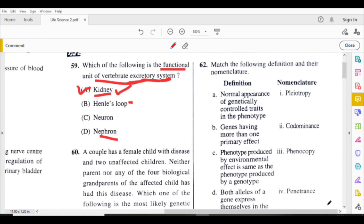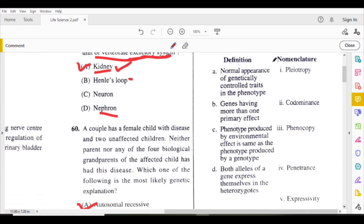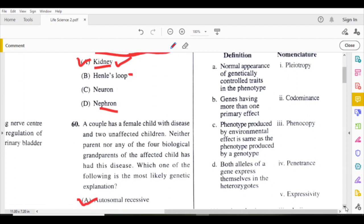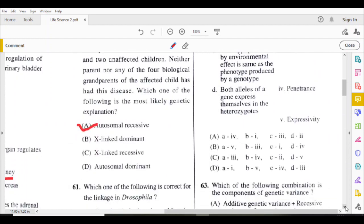Match the following: Pleiotropy means the same gene produces more than two different characteristics. It controls more than two or three traits, so genes having more than one primary effect. B1. A is the answer.